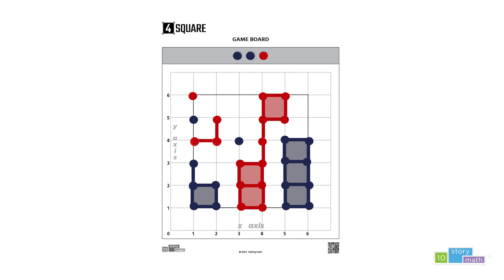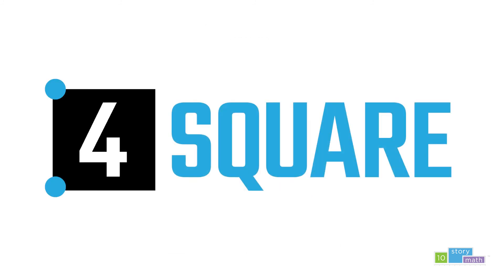Now this game is over. Let's count the number of squares that each team made to determine the winner. In this example, blue wins. But that's okay, red. You'll get them next time. And now you're ready to play Foursquare.